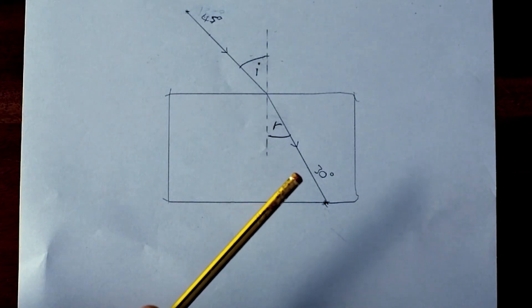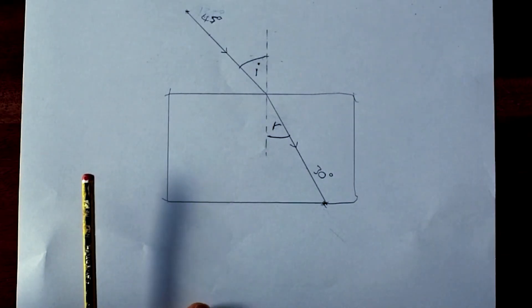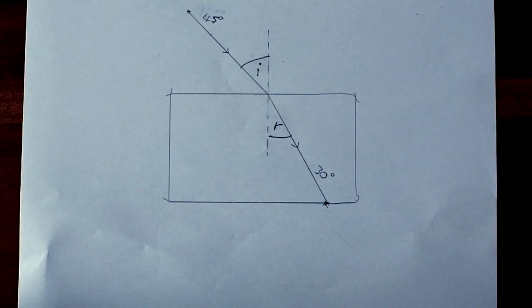Now the more that light bends as it enters a new medium, the higher the refractive index we say that it has. And we can actually do a calculation to find out the refractive index of a material.